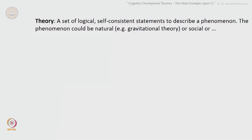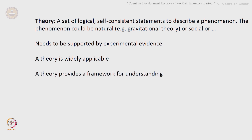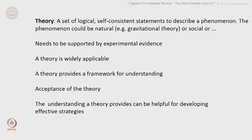To reinforce: a theory is a set of logical, self-consistent statements to describe a phenomenon. The phenomenon could be natural, as we know the gravitational theory — acceleration due to gravity being the same — or social. The theory needs to be supported by experimental evidence; a theory is widely applicable, and that is what our attraction is towards it. We understand it so that we will be able to make sense of a large variety of situations. A theory provides a framework for understanding and needs to be accepted, which happens over time. The understanding a theory provides can be helpful for developing effective strategies.